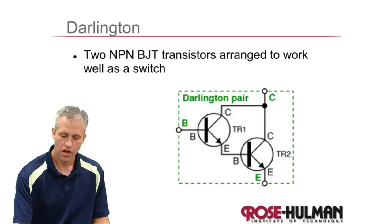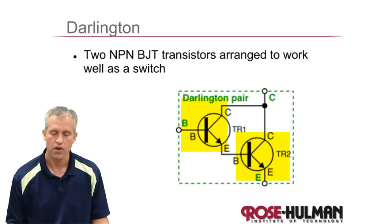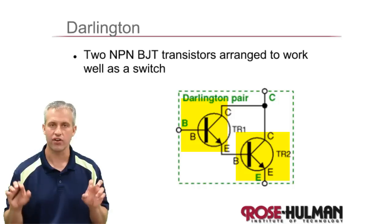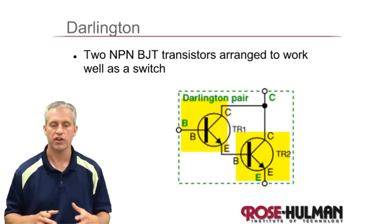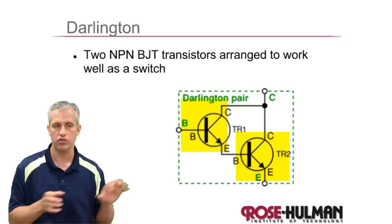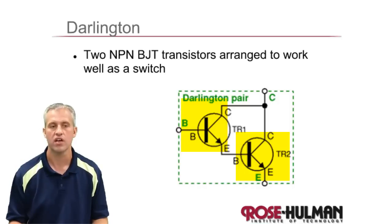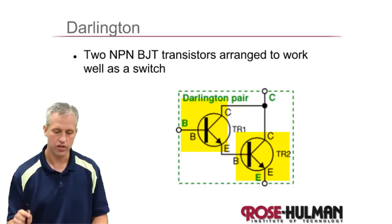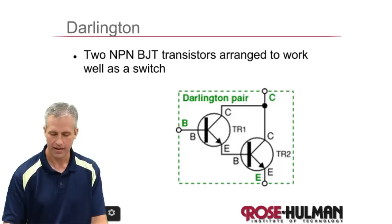The first is a Darlington. What a Darlington is, is it's actually two BJTs together in this clever pair. It works out really nice for you. You get a slightly bigger gain, so you can use even less current to control even higher current loads, which is nice. But what makes them really useful is that they come in handy packages.